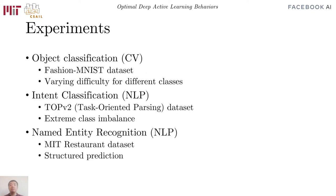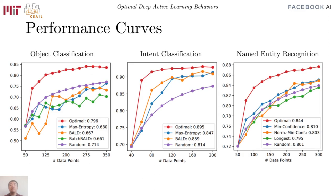In the experiments, we study three tasks: object classification, intent classification, and name entity recognition. On all of them, we observe a large performance gap between the optimal oracle, shown in red, and the various heuristics, suggesting ample room for improvement.